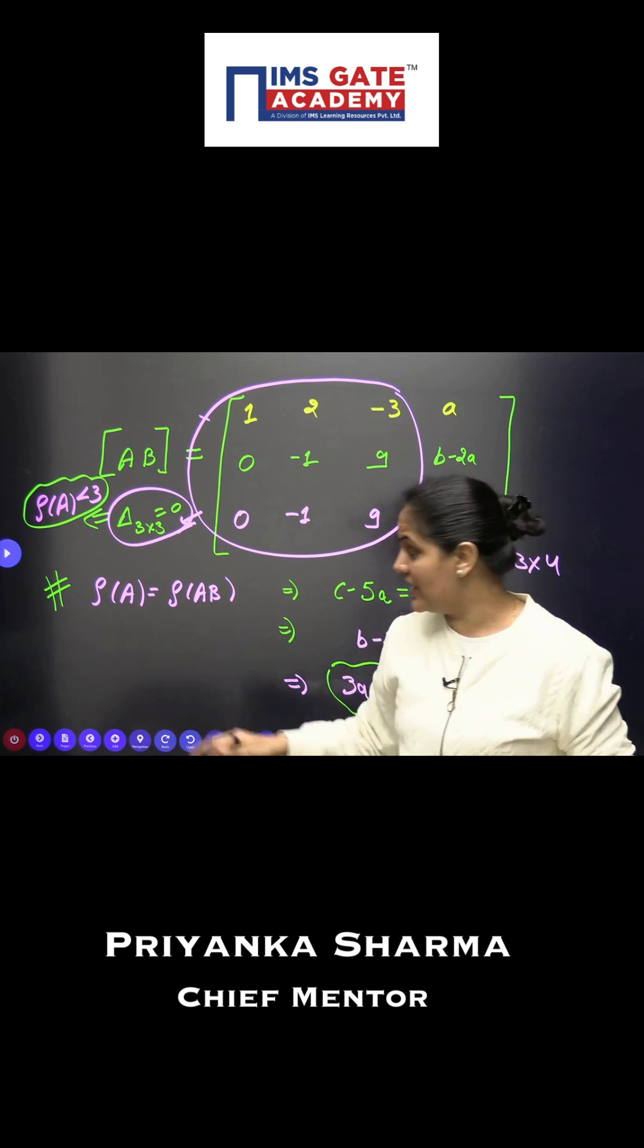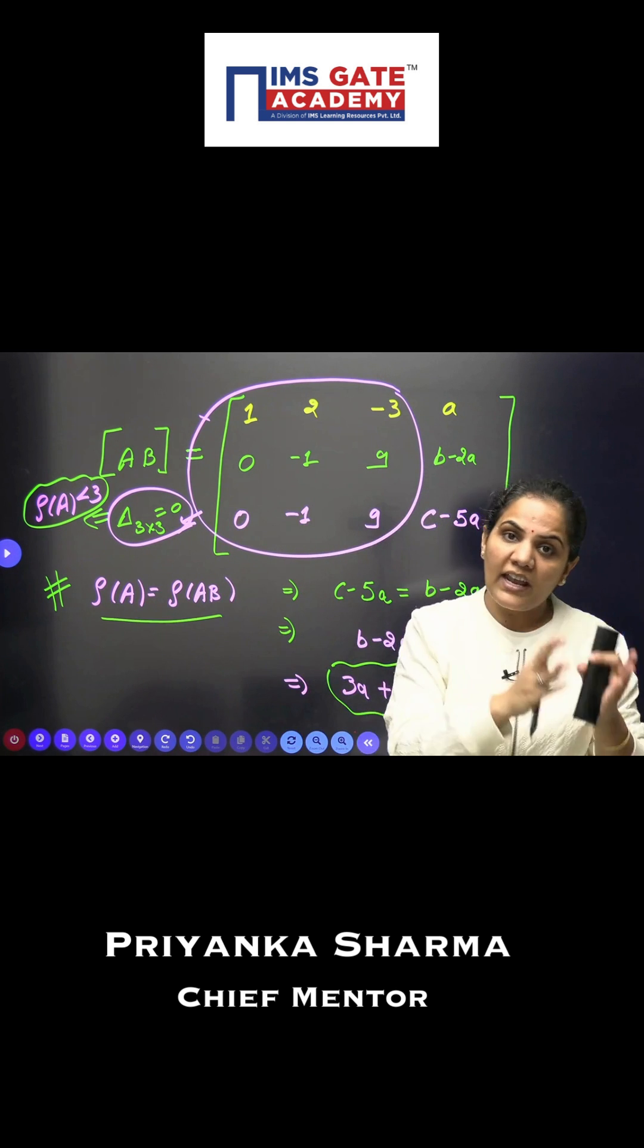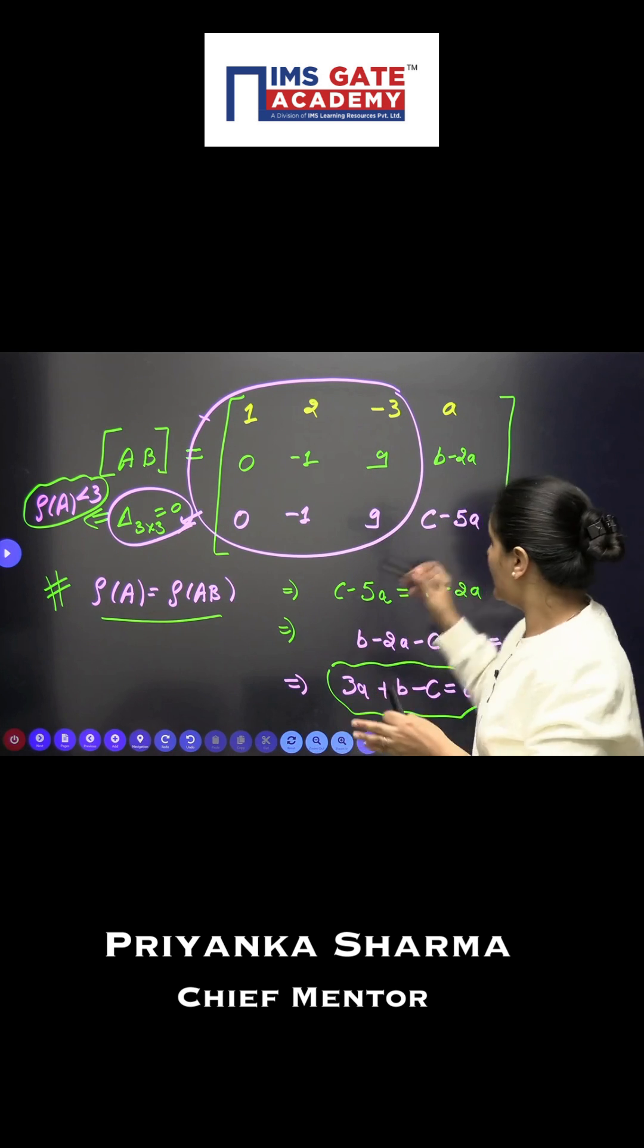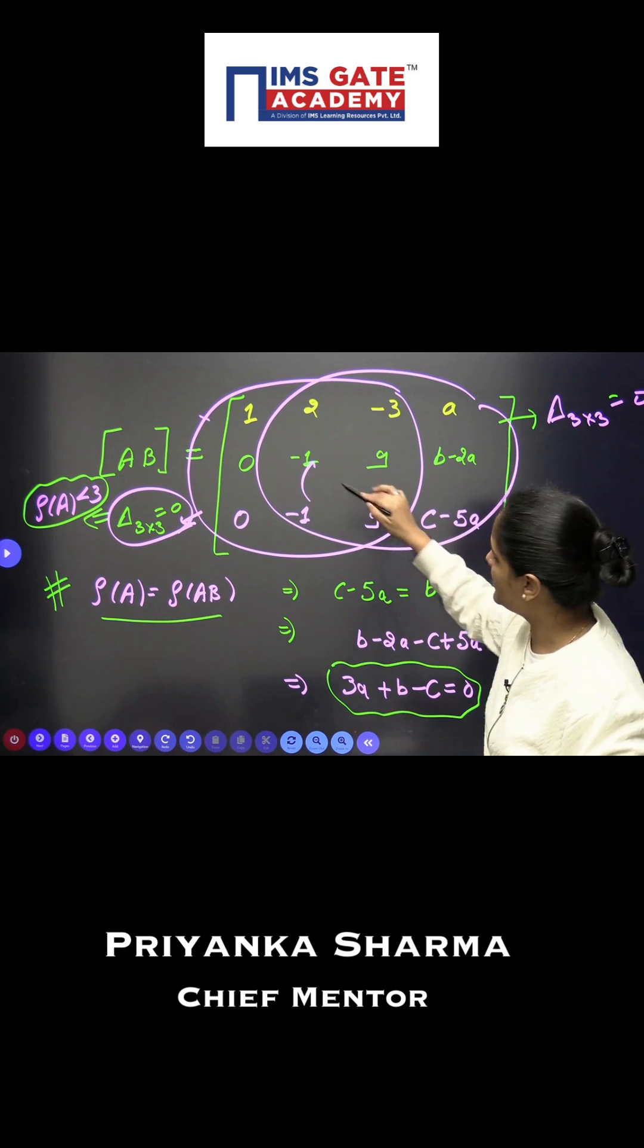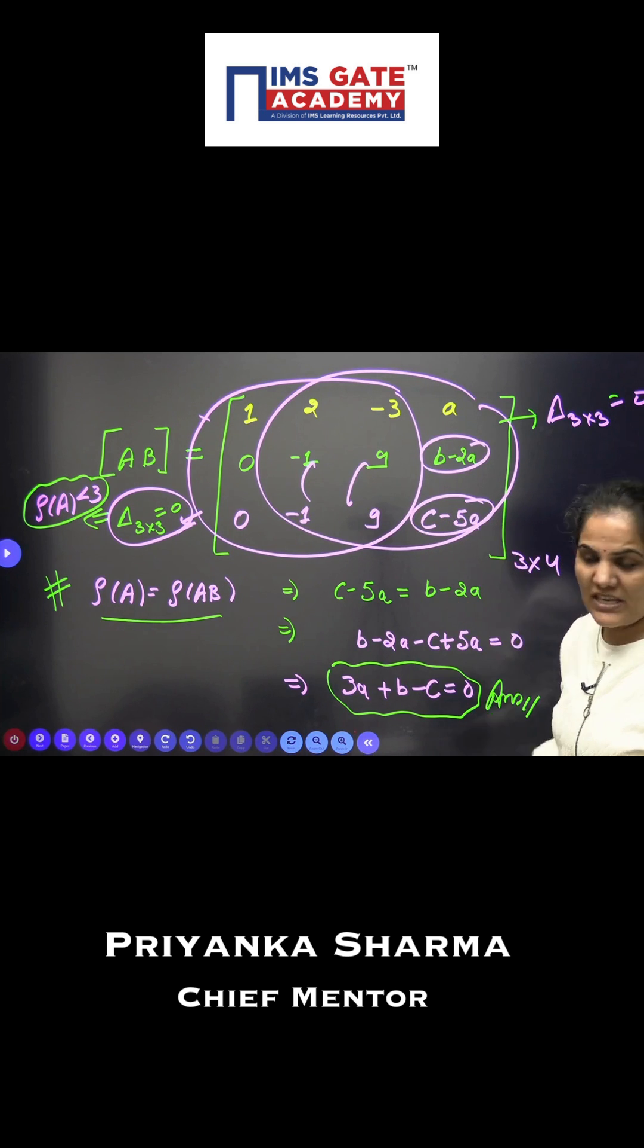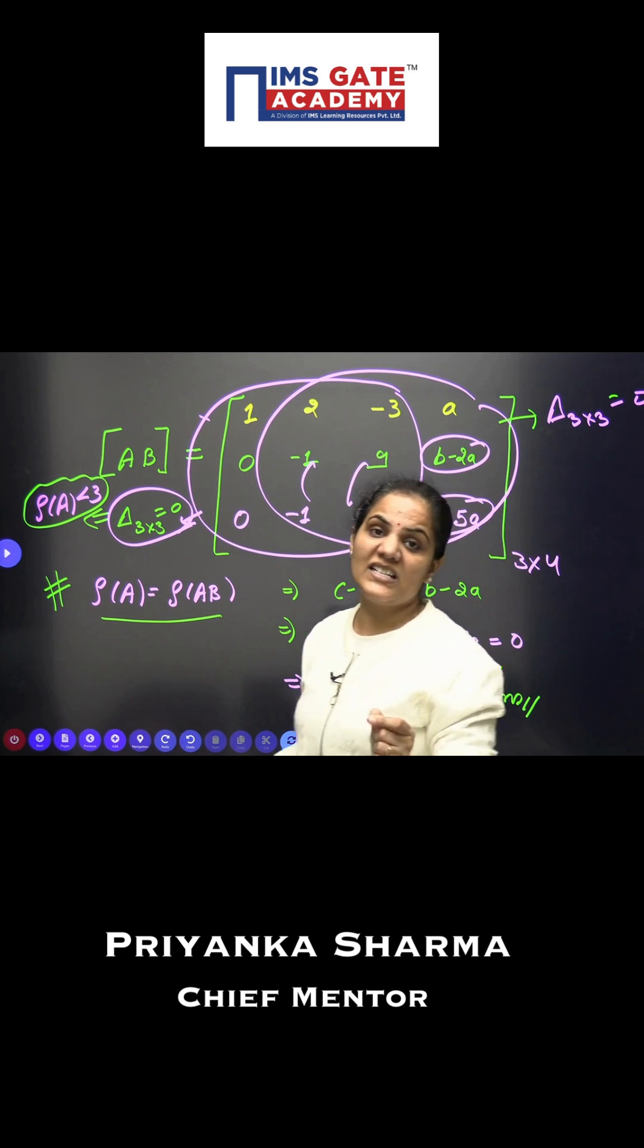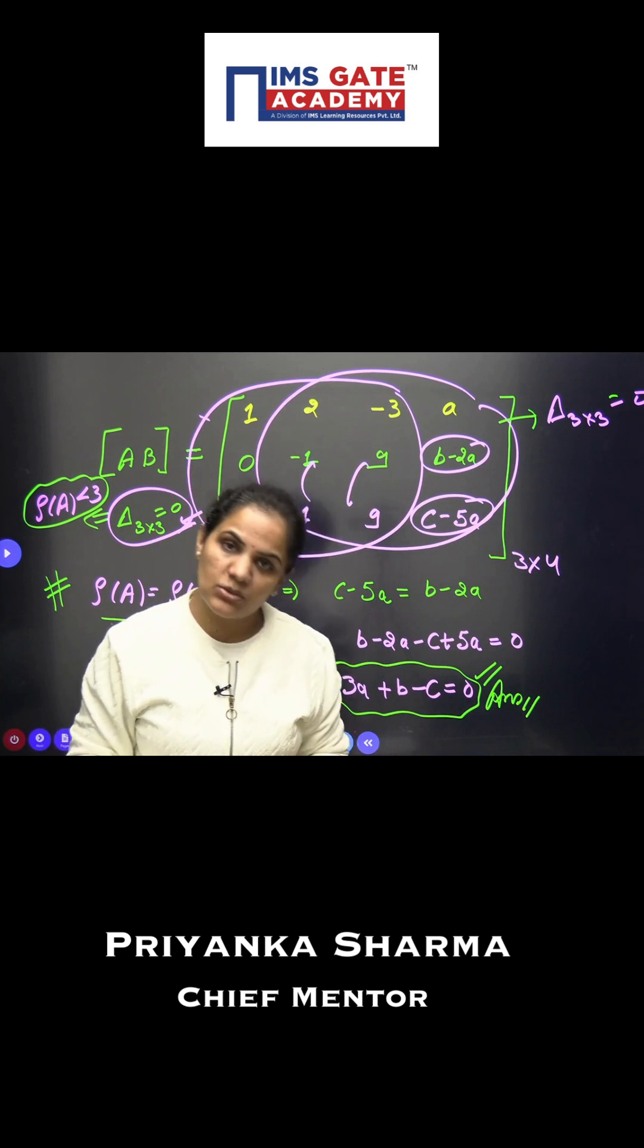But it's given that rank of A and AB are equal, so the same approach applies to the second minor. This must also be zero. When you put this zero, these elements are equal, so these two elements must be equal. When you equate these two things, you get the required condition: 3A + B - C = 0.